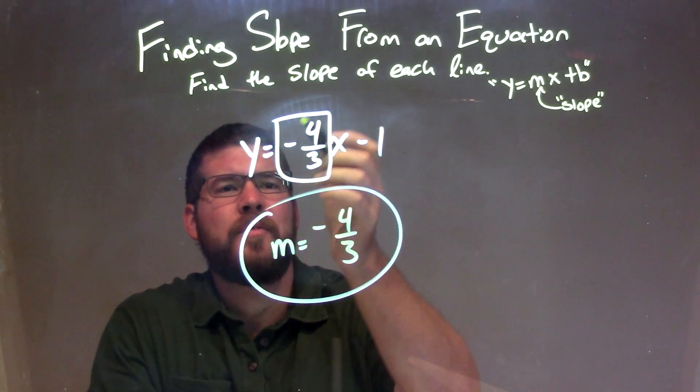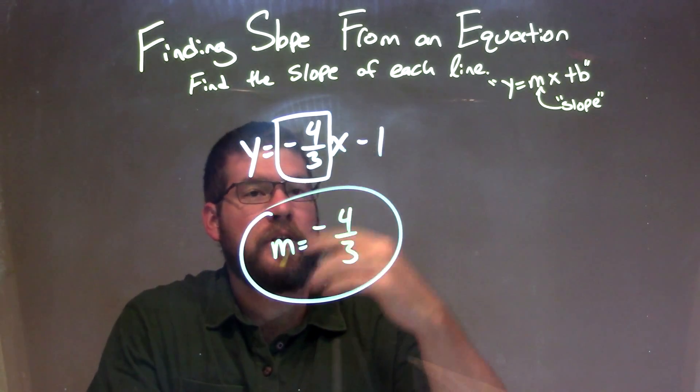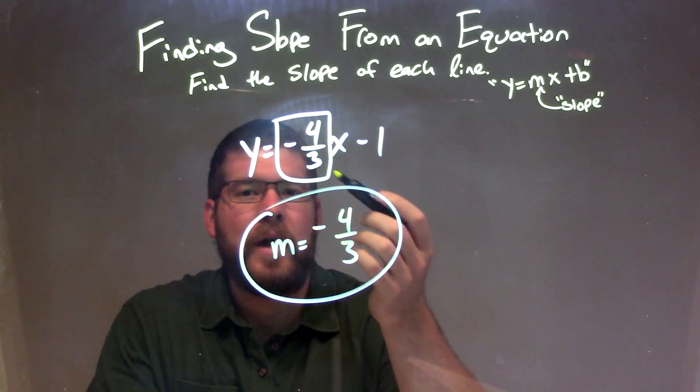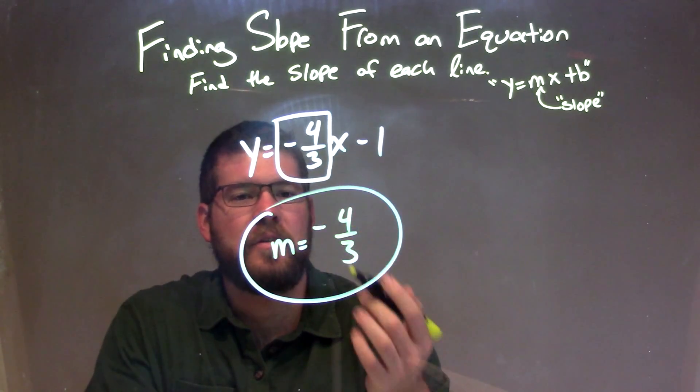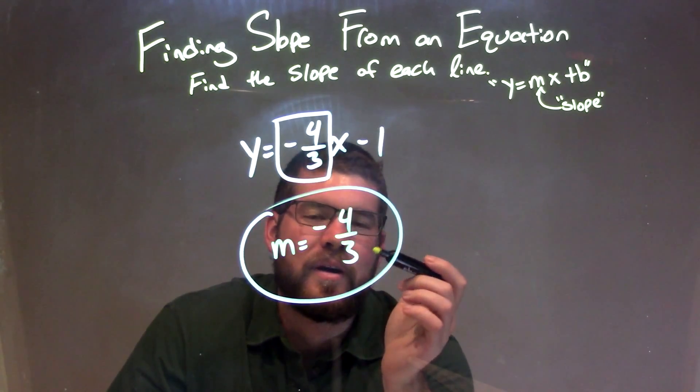So if I take a little recap, we have y equals negative four-thirds x minus one. We notice that it's in slope intercept form, and so our m value, the value of the coefficient that's in front of x, is our slope. So I just identify that and write it down here as m equals negative four-thirds.